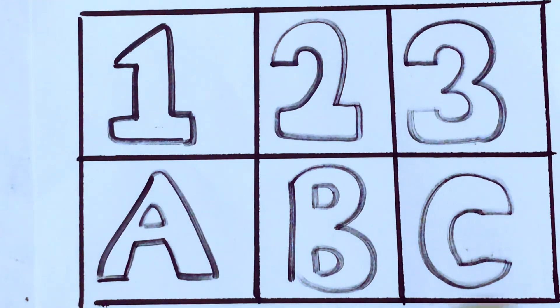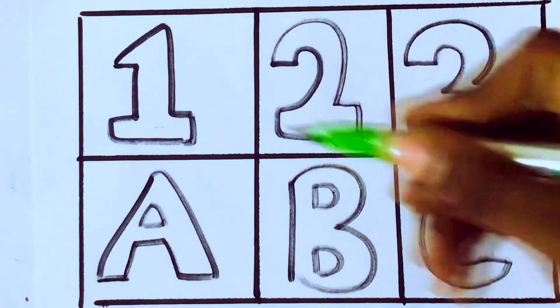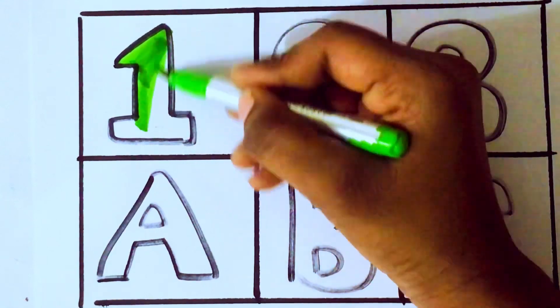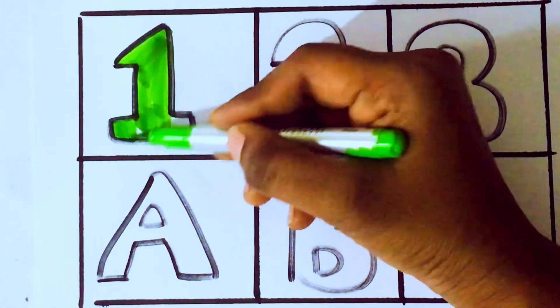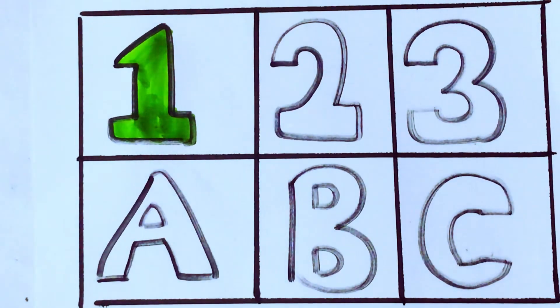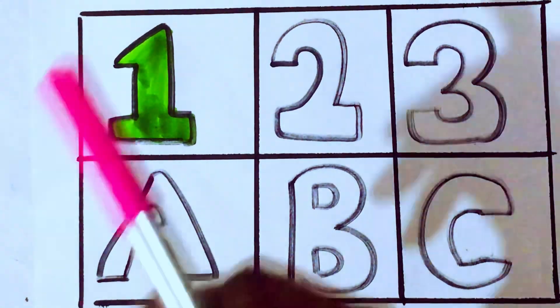Let's draw the numbers. Like green color. 1, O, N, E, 1. 1, O, N, E, 1.